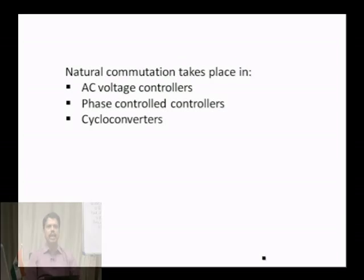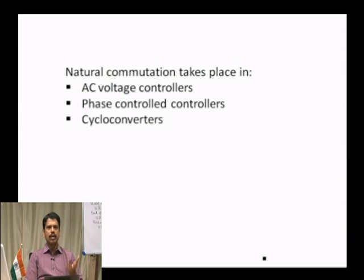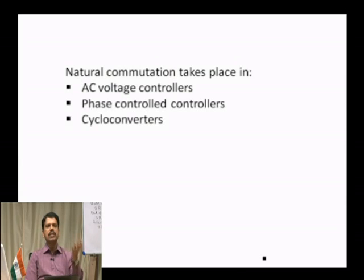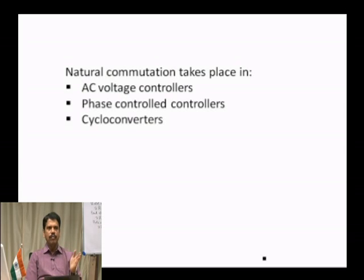Natural commutation takes place in AC voltage controllers, phase control rectifiers, and cycloconverters. In all three applications, the input voltage is AC. In AC voltage controllers, input is AC and output is AC with variable voltage. In phase control rectifiers, input is AC and output is DC. In cycloconverters, input is AC and output is AC with variable frequency.